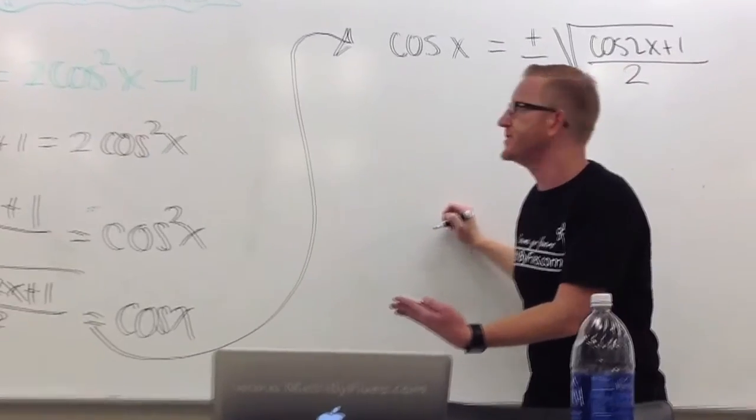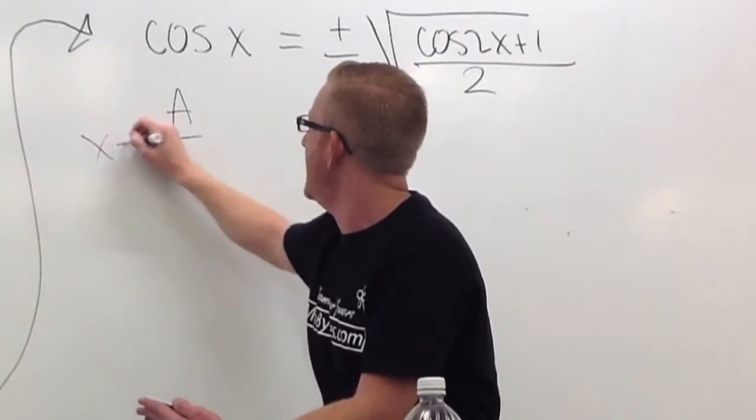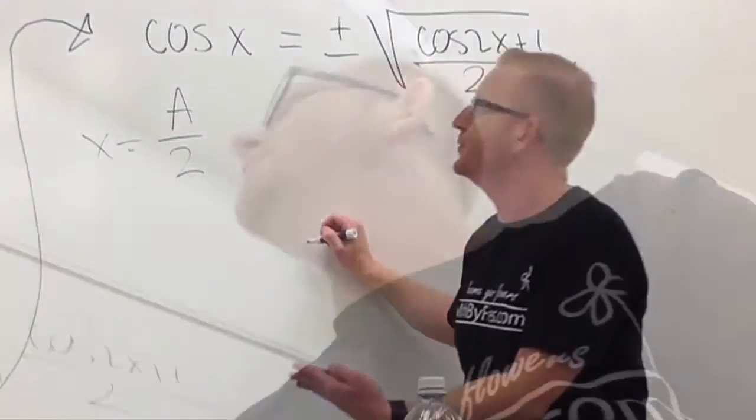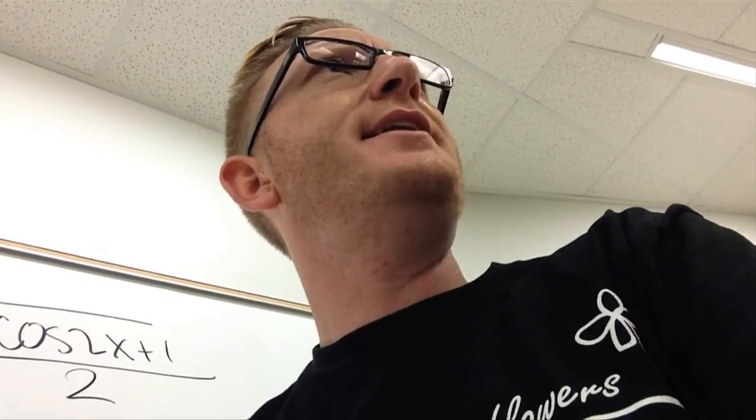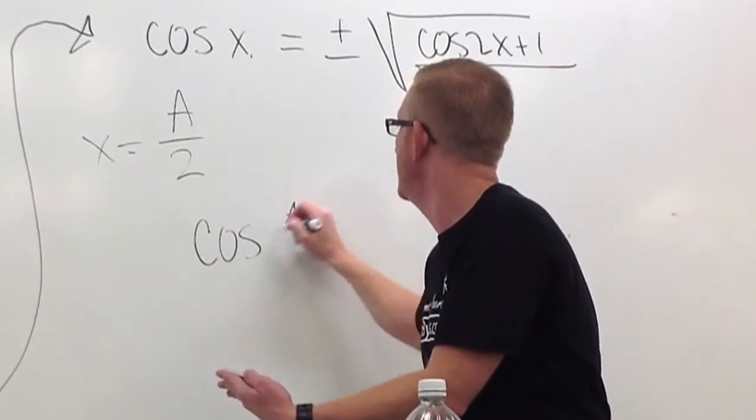I want to make a substitution. Yeah, put me in coach. I want to let x equal a over 2. And when I do, everywhere I see an x, I'm going to put an a over 2. So there's an x, so I put the cosine of a over 2.